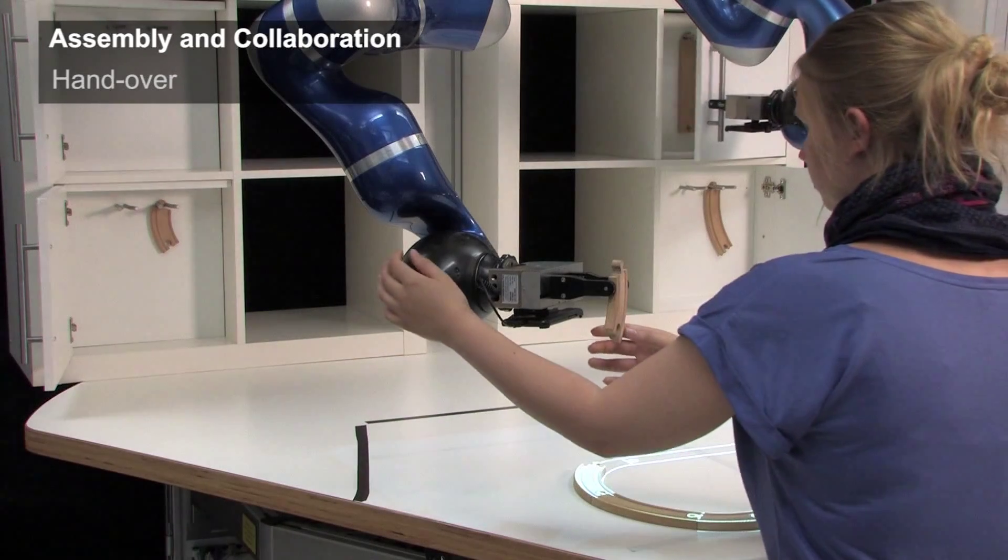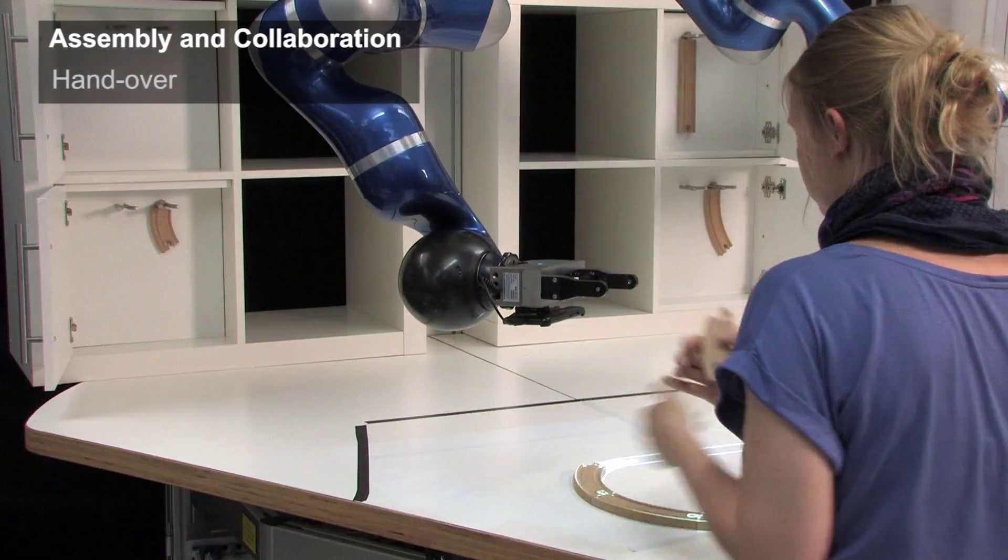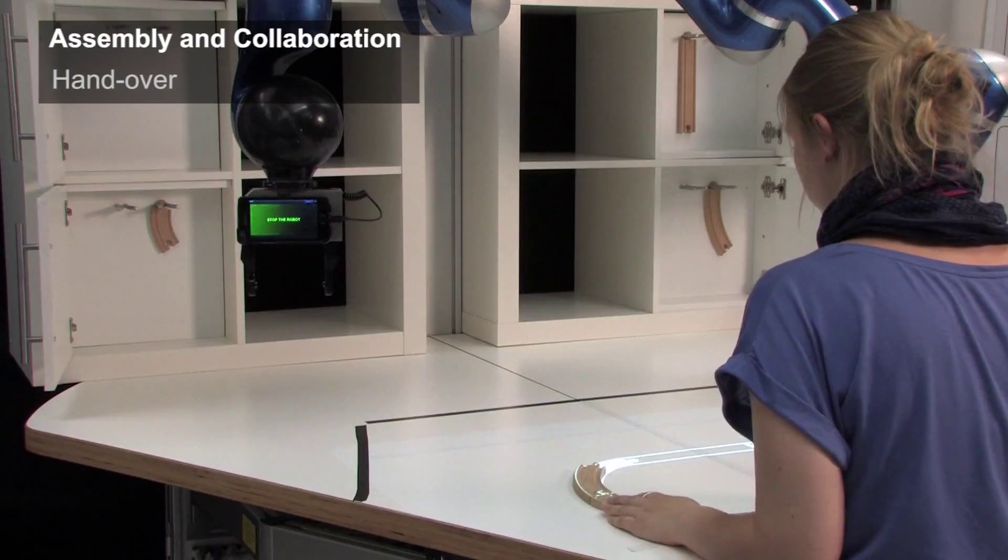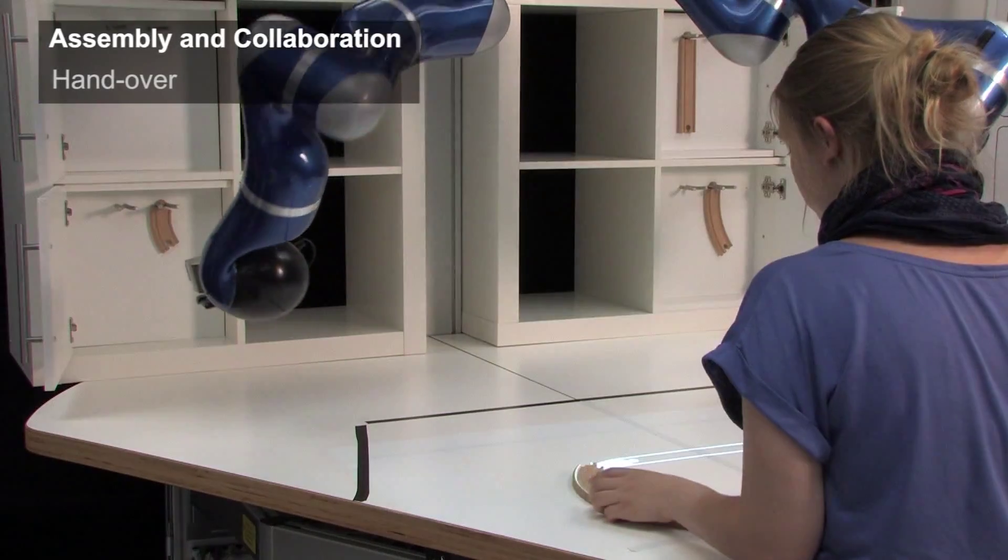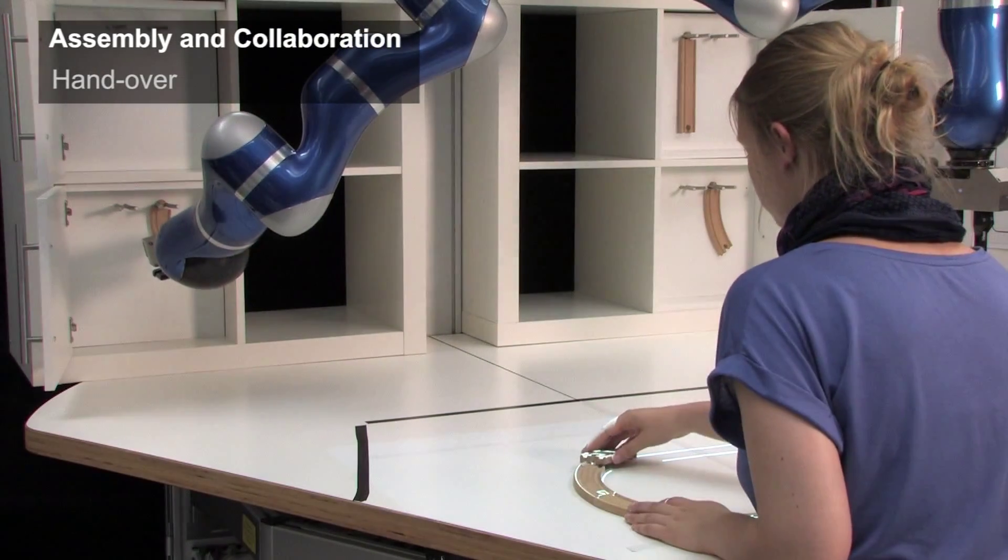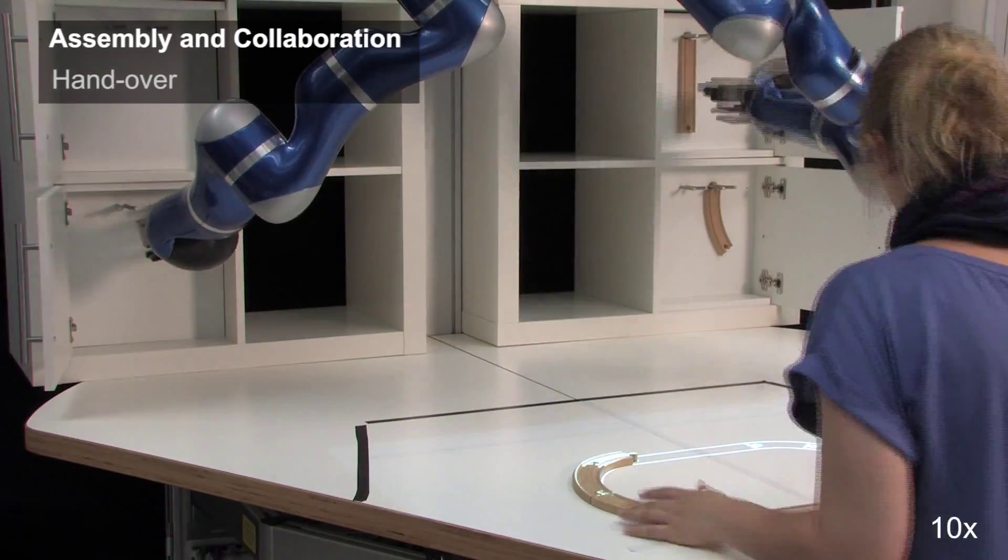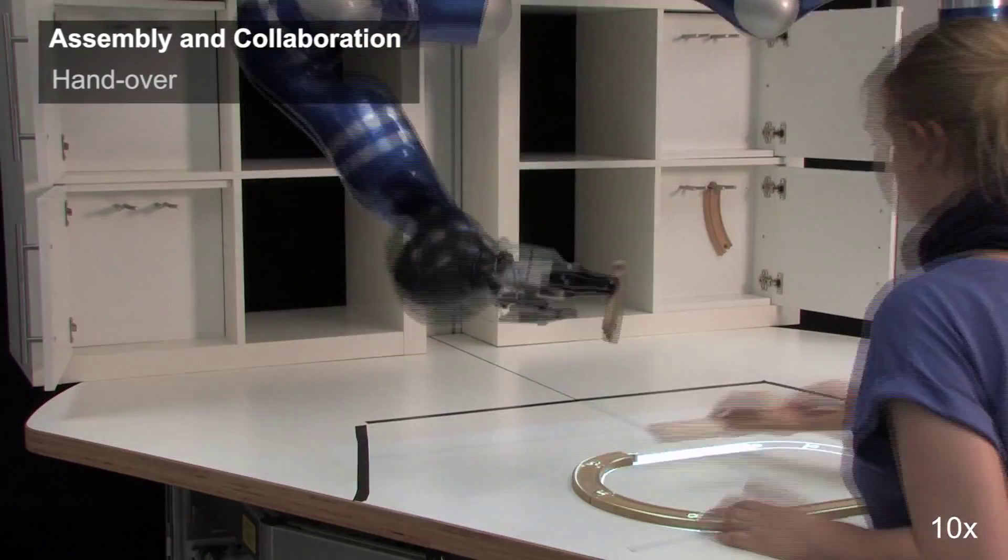Using a light haptic gesture, the human tells the robot to hand over the part and therefore controls the overall task progress. A projection on the table ensures that the human is always aware of the robot's internal thinking.